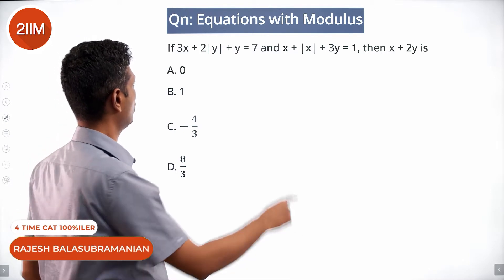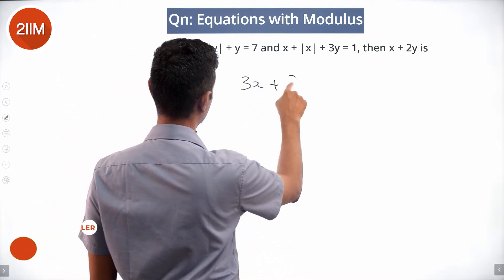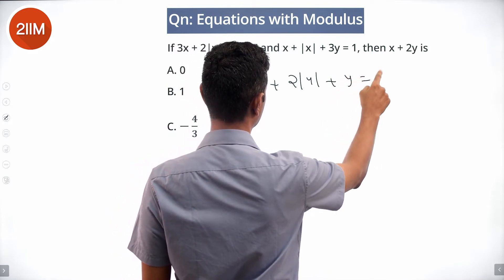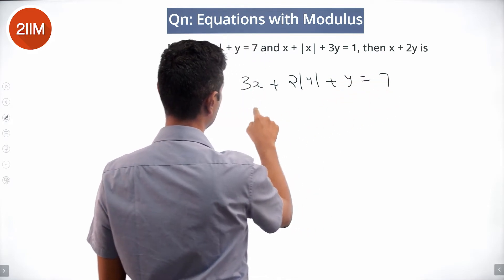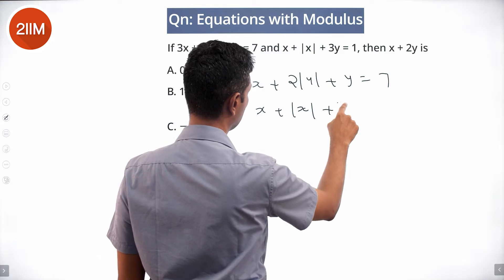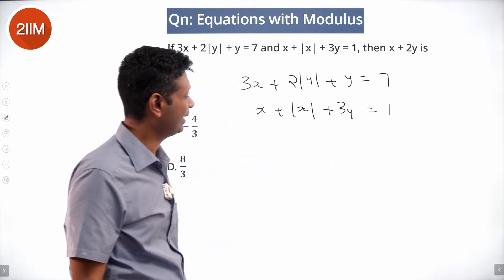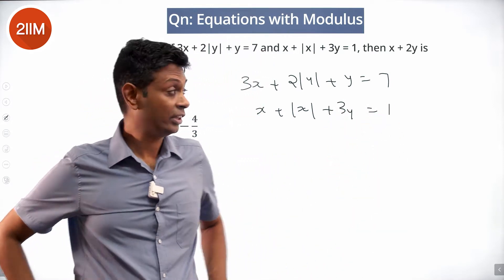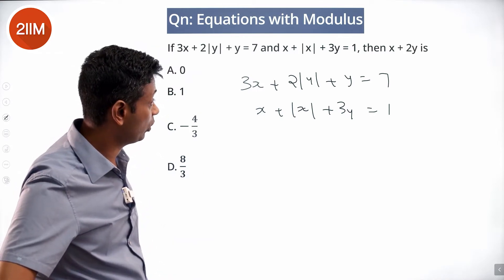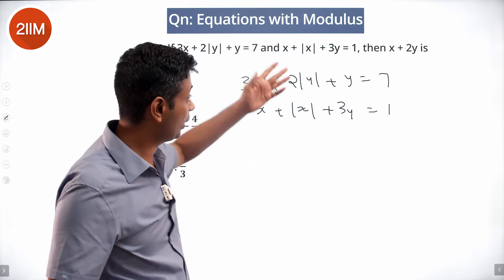We have two equations: 3x + 2|y| + y = 7 and x + |x| + 3y = 1. We want to find x + 2y. Can we just add or subtract the two equations to get x + 2y? That's tough because there's a |y| in one and a |x| in the other — they're not going to go away easily.